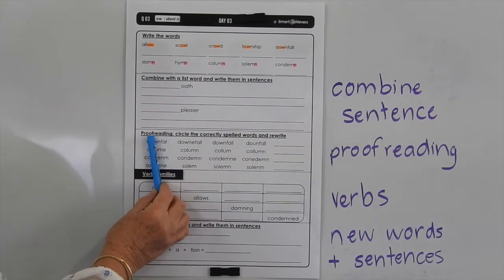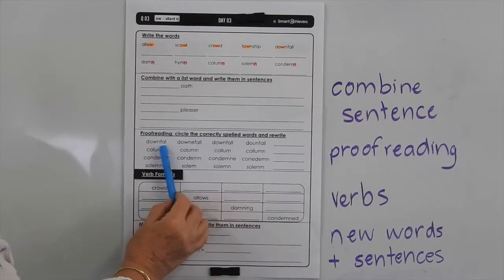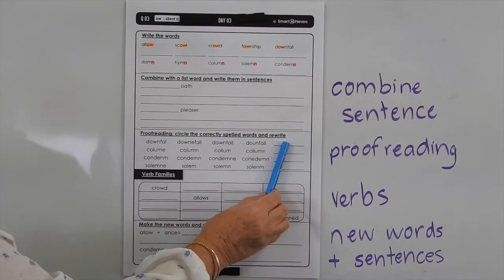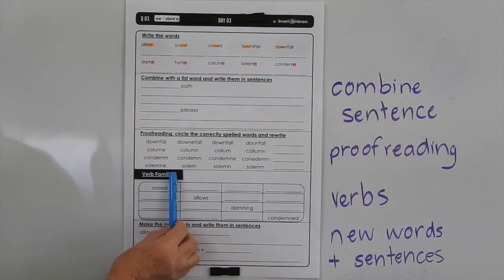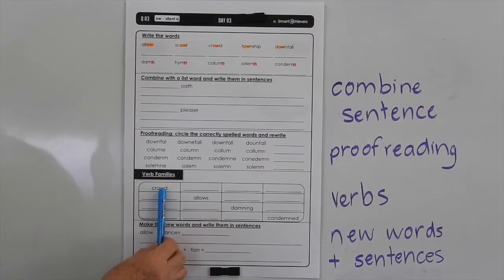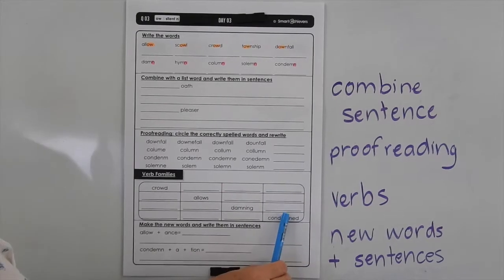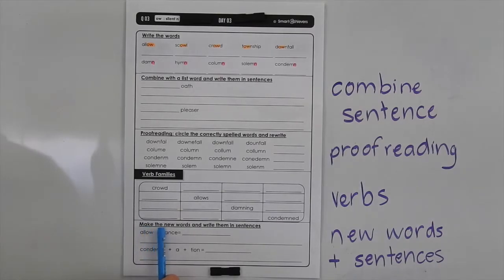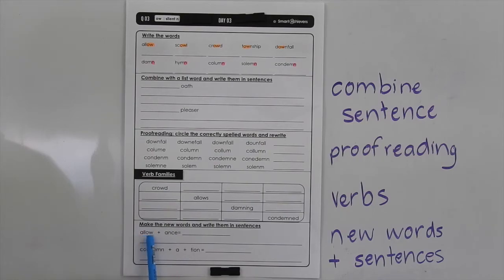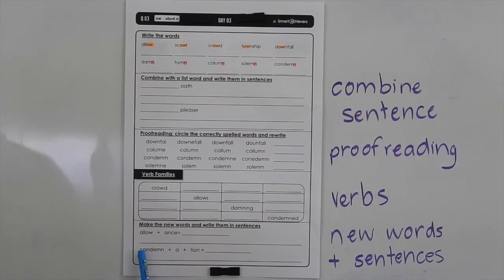Now down here, we've got a proofreading exercise. We want you to circle the word when it's spelt correctly and then write it on the line at the end. Down here, we're doing some more work on verb families — write the word in its different tenses: crowd, crowds, crowding, crowded. Use the given words if you forget what the pattern is. Down at the very bottom, we've got 'make the new words and write them in sentences' — the words you'll be making are 'allowance' and 'condemnation'. We're actually hearing that N when we say 'condemnation'.